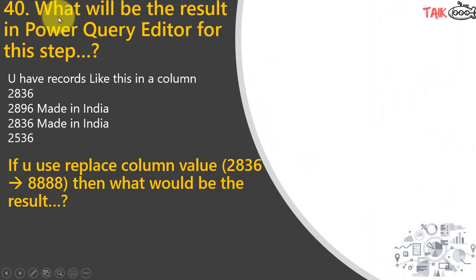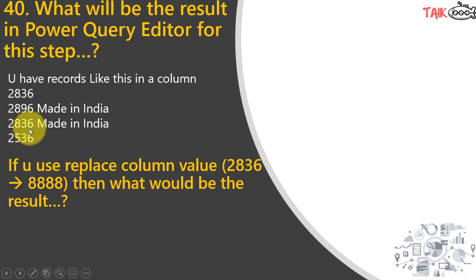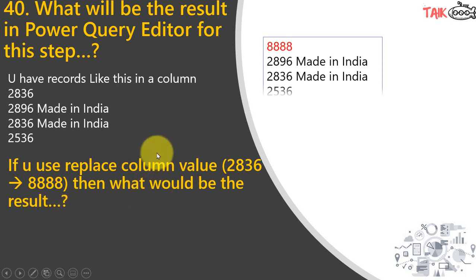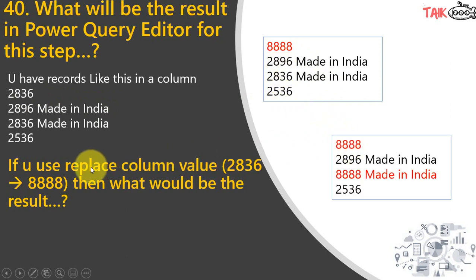The next question: what will be the result in the Power Query Editor for this step? You have records in a column: 2836, '2896 made in India', '2836 made in India', and 2536. If you use Replace Column Value to replace 2836 with 48, what would be the result? One option is it replaces only the first occurrence; the other is it replaces wherever 2836 appears in that column.